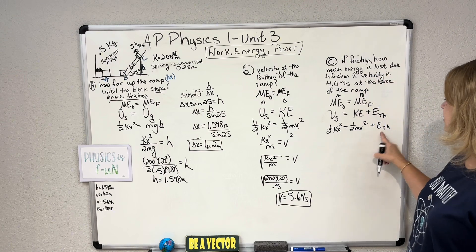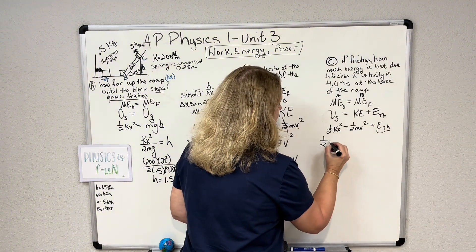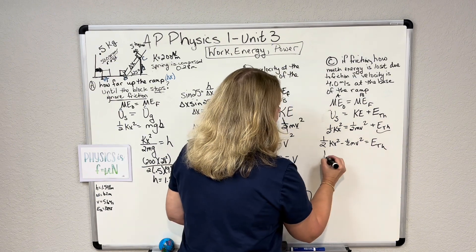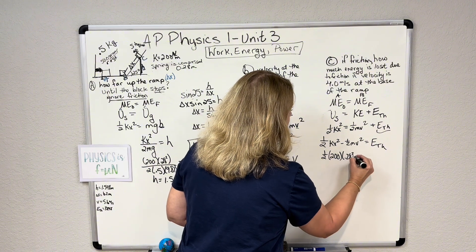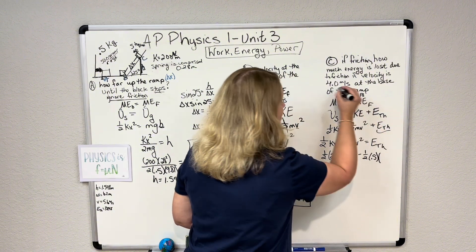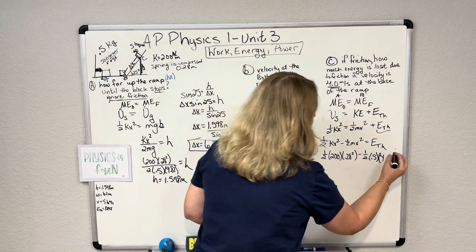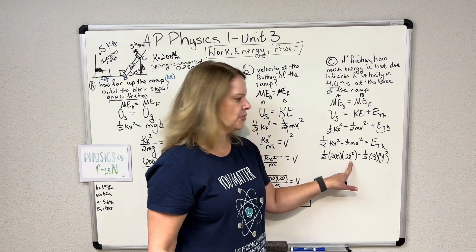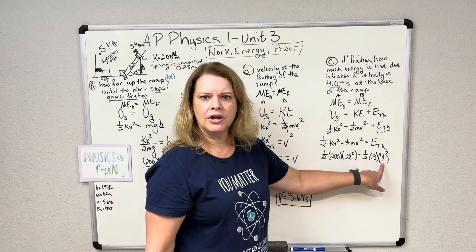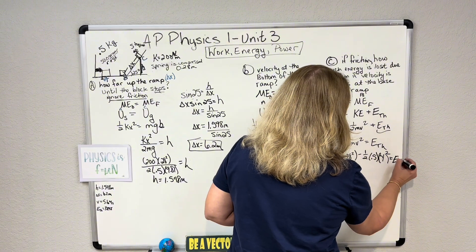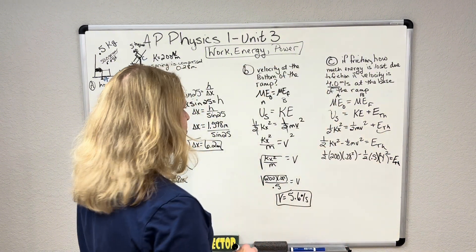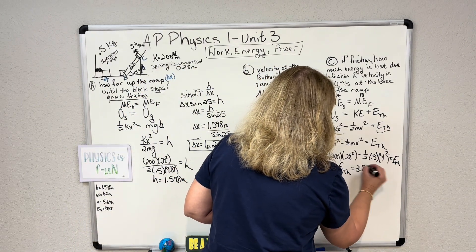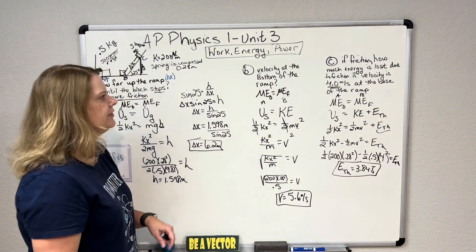I'm going to subtract. One half kx squared minus one half mv squared equals that thermal energy. We know k is 200, x is 0.28 squared, mass is 0.5, the velocity now is 4, it used to be 5.6, now it's 4 and that's squared. Do not forget the square on the x on the amount compressed or stretched and the squared on the velocity because that's very common to lose those. If you were to do those and come up with that, then you would end up with a thermal energy of 3.84 joules that was lost in the form of thermal energy.